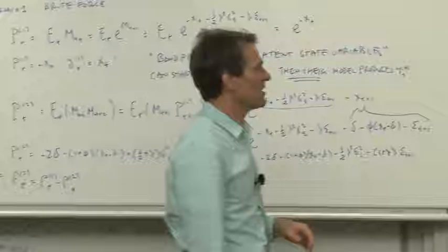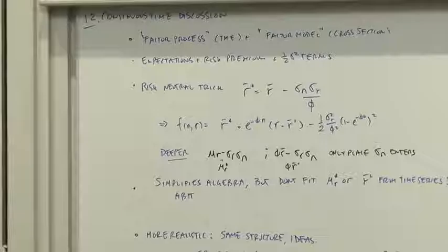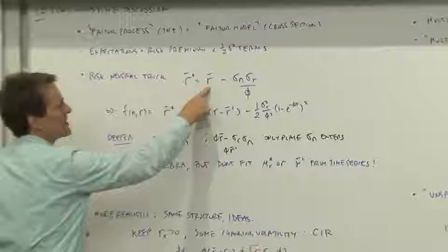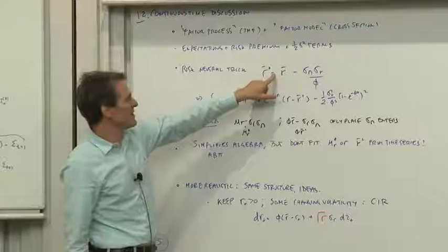The risk neutral trick is particularly clear in this continuous time model. The risk premiums we can capture with a distorted mean of where the average interest rate is going to go. In this case, the distorted mean is the actual mean, and there is our market price of risk term.